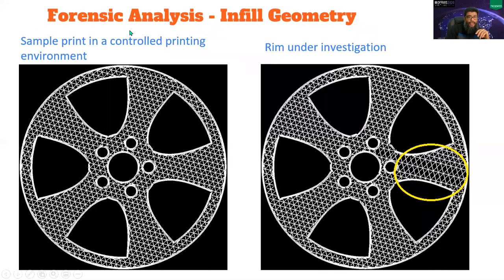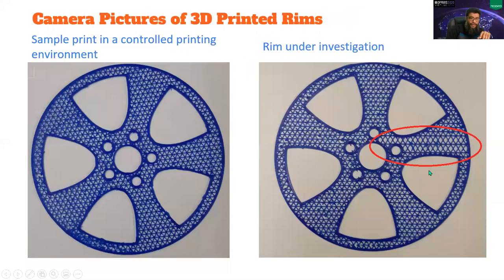Now here you can see, this is the sample that was printed and this is the rim under investigation. And you see, this is a space domain representation. In this portion, you can see that a couple of lines are missing. This infill pattern lines are deliberately missed out due to some attack. We also printed these infill lines separately to give you an idea, like in actual printing, these lines are also missing.